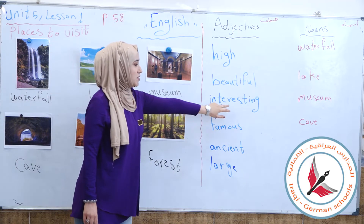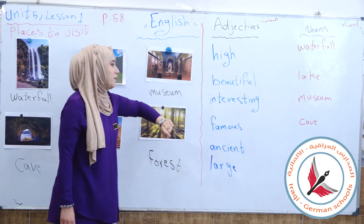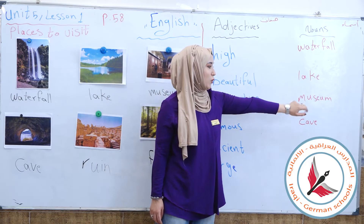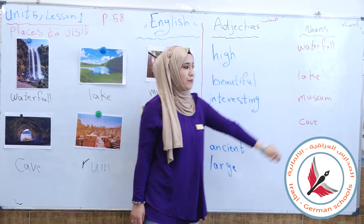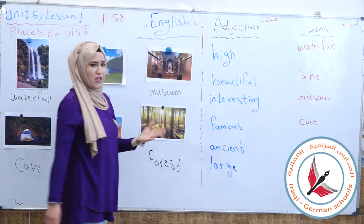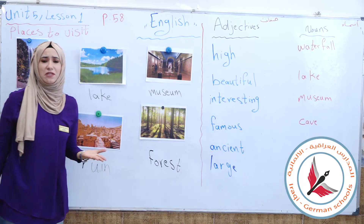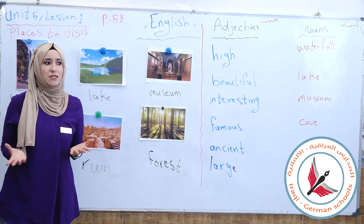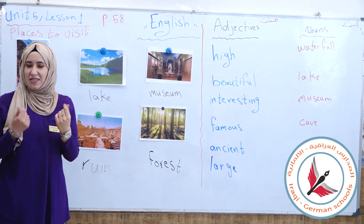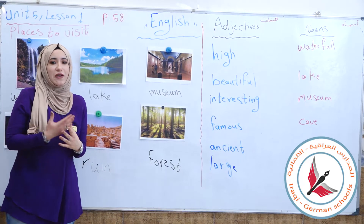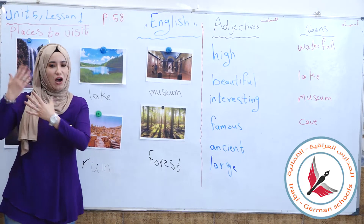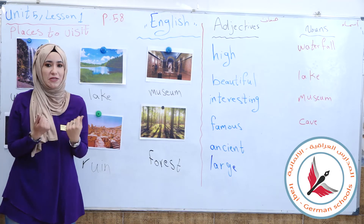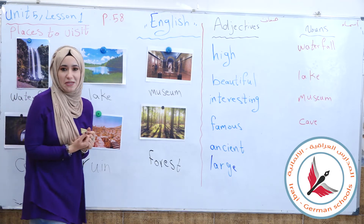The third adjective: interesting. Interesting goes with museum. Why do we call the museum interesting? Because it has lots of things — strange, beautiful things we haven't seen before, ancient artifacts from the past that are fascinating and unusual.